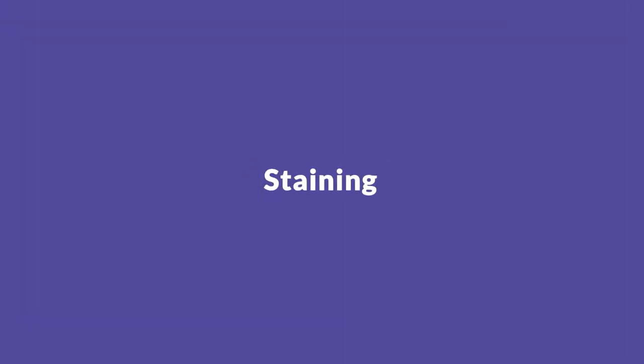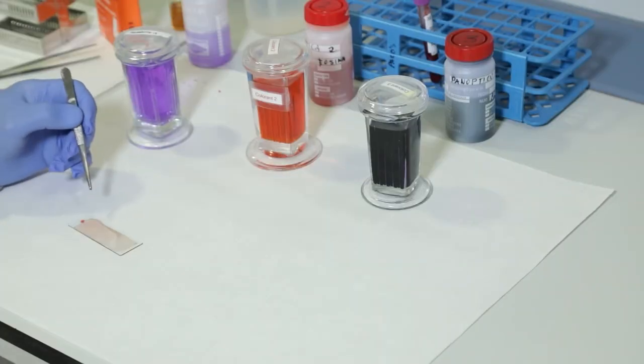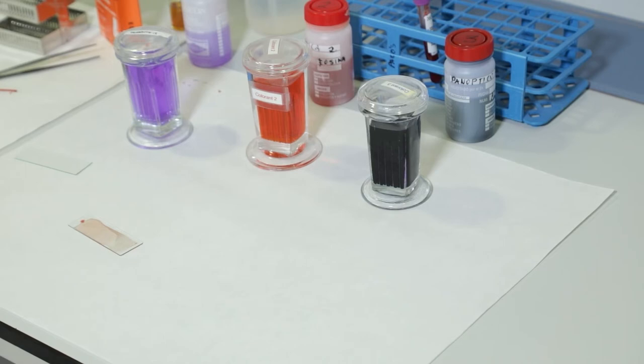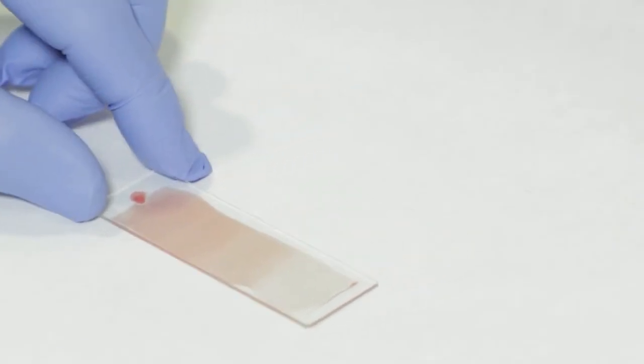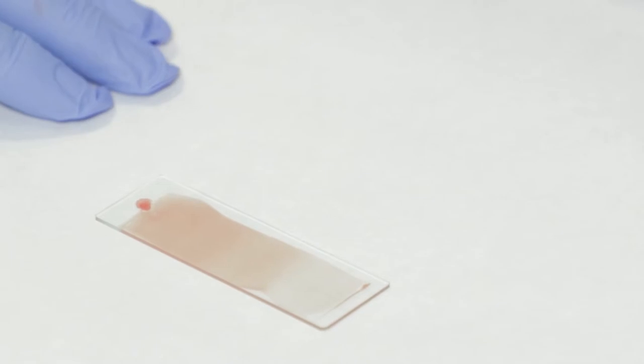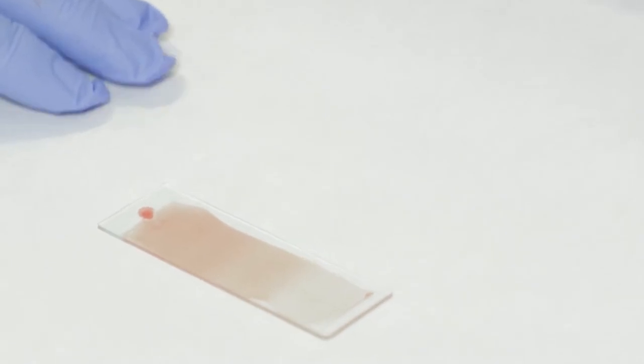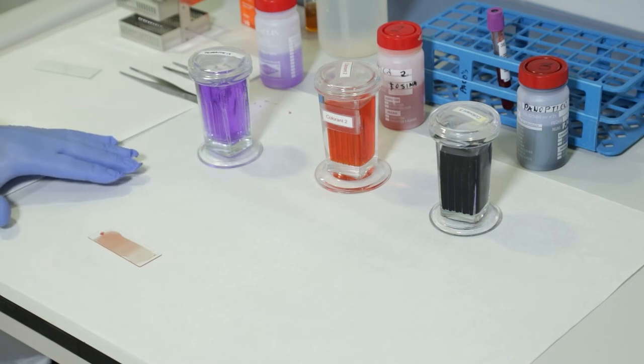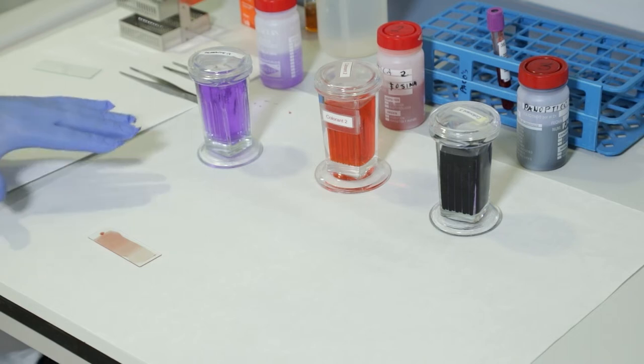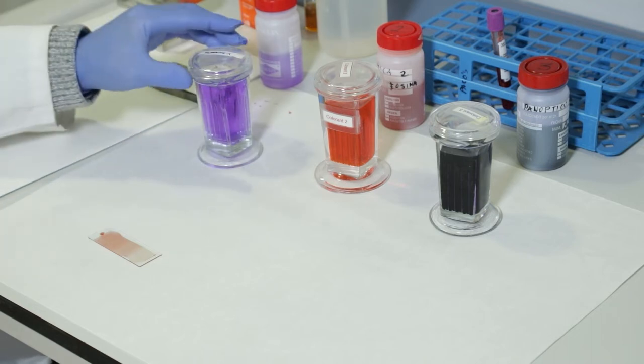Staining. The air dried smear is then stained. The reagents are commercially available. We use the rapid panoptic method. Basically, it consists of fixing the sample and subjecting it to a mixture of acid and basic dyes that stain the cell structures differentially.